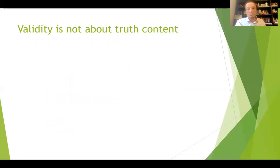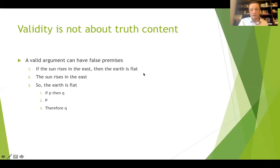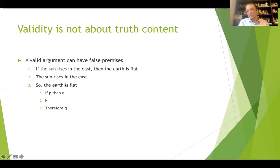Notice again: validity is not about truth content. You can have valid arguments with false premises. Here's one: if the sun rises in the east, then the earth is flat; the sun rises in the east; therefore the earth is flat. This is complete garbage — it's not true that if the sun rises in the east then the earth is flat. But it's a valid argument because it follows the modus ponens form: if P then Q, P, therefore Q. So this is valid, but not sound.